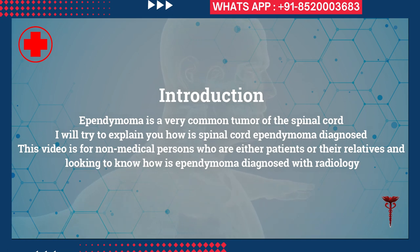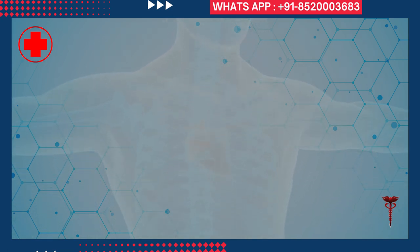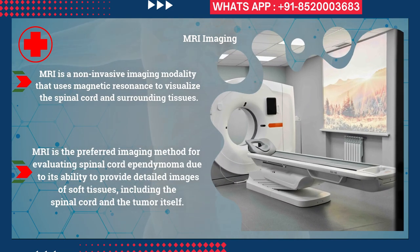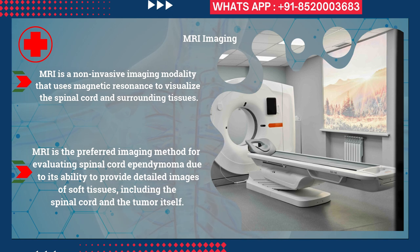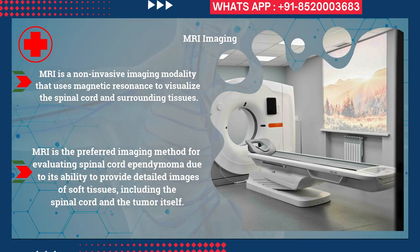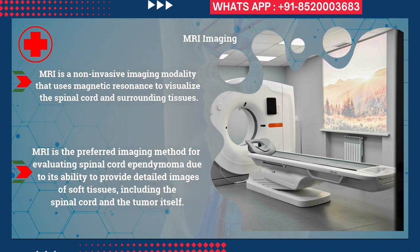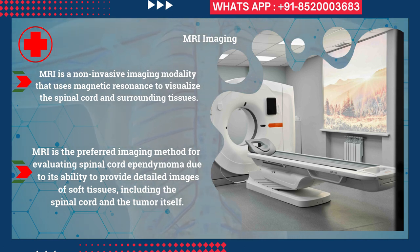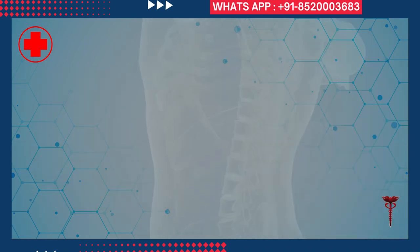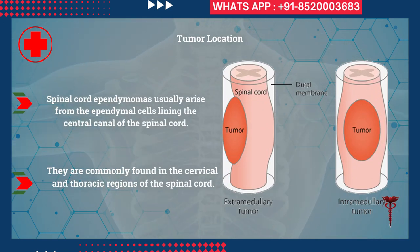MR imaging - magnetic resonance imaging - is the preferred method for evaluation of spinal cord ependymoma. MRI is preferred because of its ability to provide detailed imaging of soft tissues. You will have a very clear image of the tumor, the spinal cord, and its relation to other soft tissues like the muscles and the laminae.